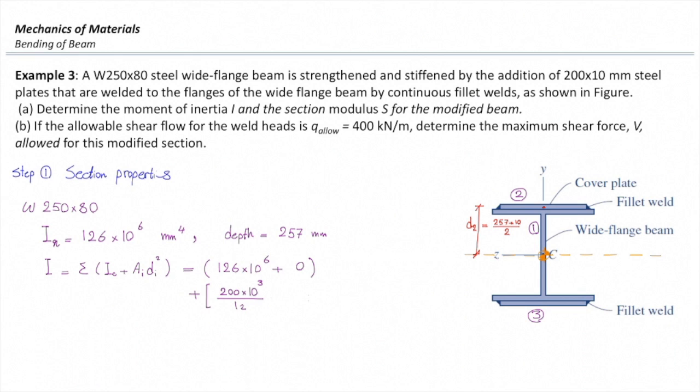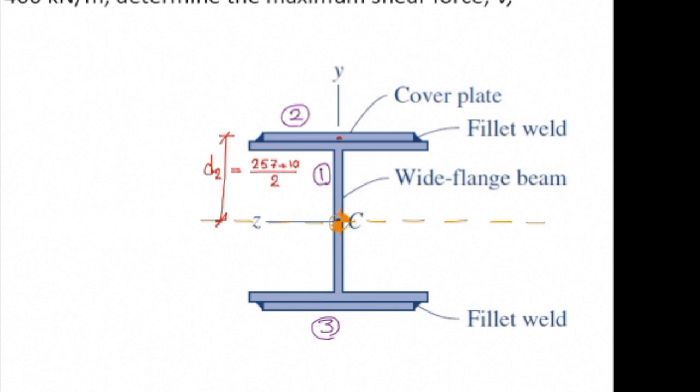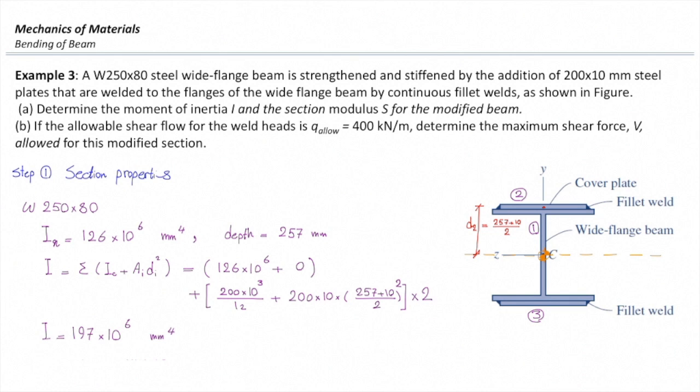For the plate on the top, the width is 200 and the height is 10. That would be 200 times 10 cubed over 12, plus its area times distance of its centroid to the center of the entire section, which is 257 over 2 plus 10 over 2. If I plug that, I will get moment of inertia for the whole section equal to 197.